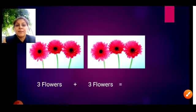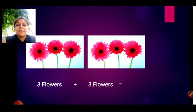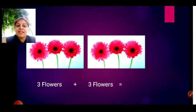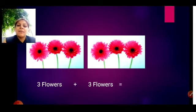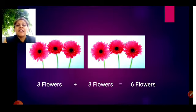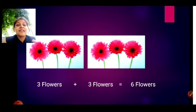Now same way, see — here are the flowers, right? So three flowers and another three flowers, both are the same. Three and three. So three flowers plus three flowers is equal to six flowers, right? Three plus three. Here three and three, both are the same numbers.